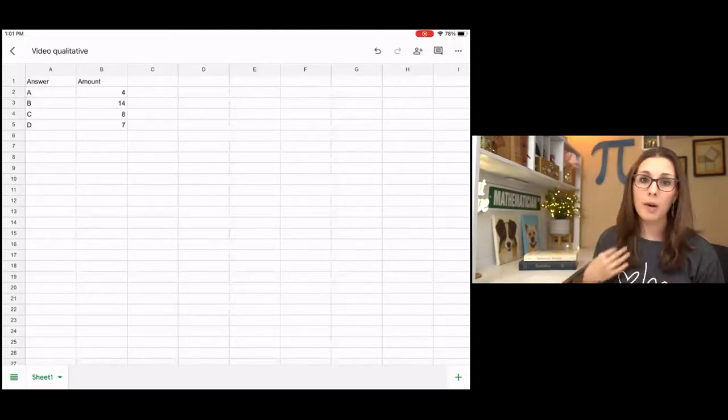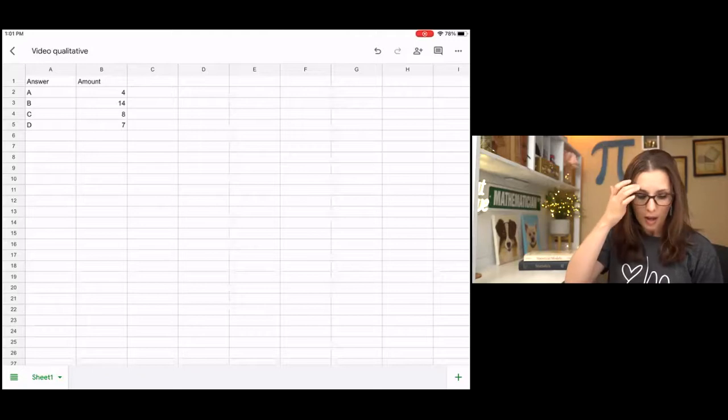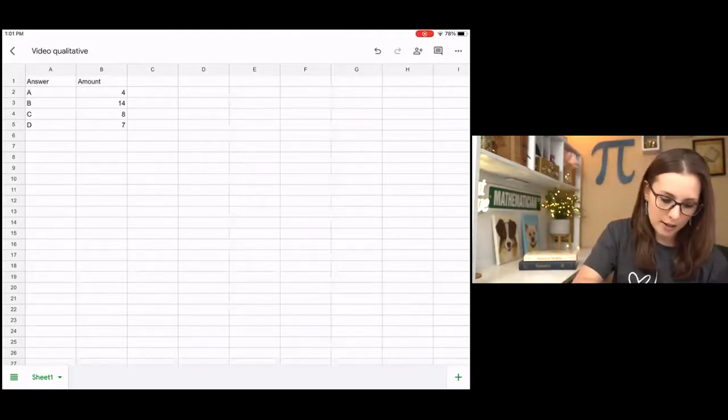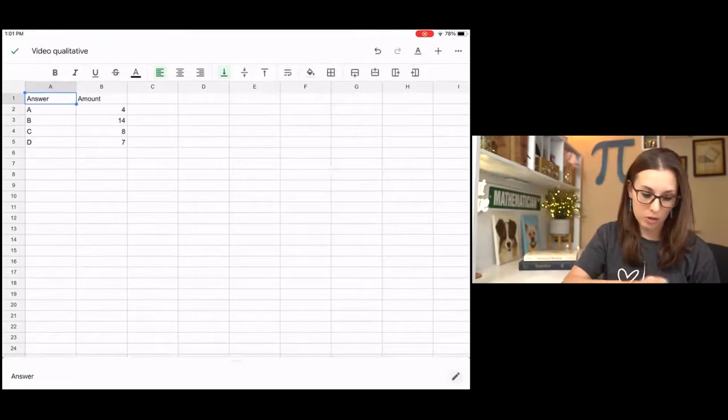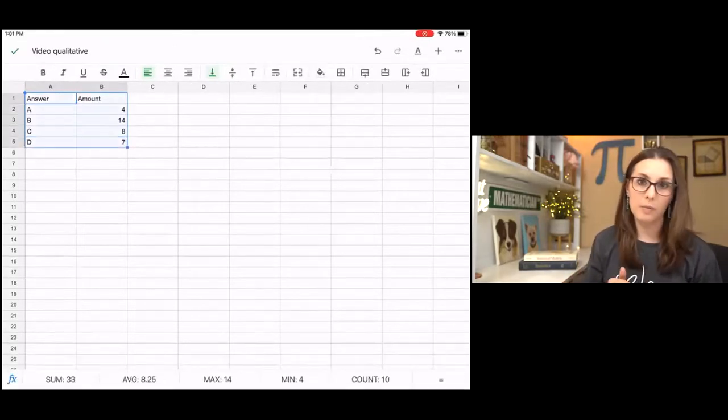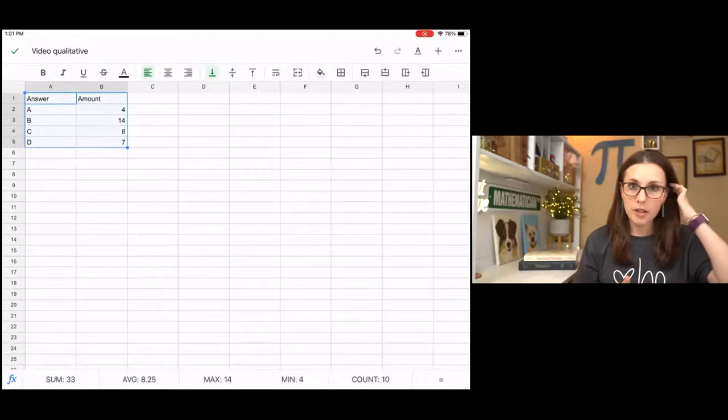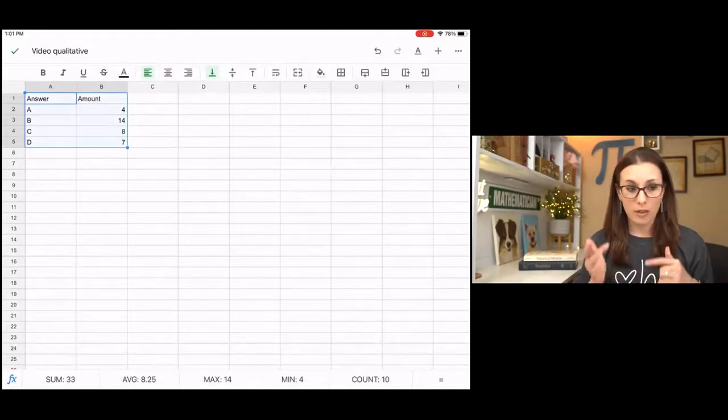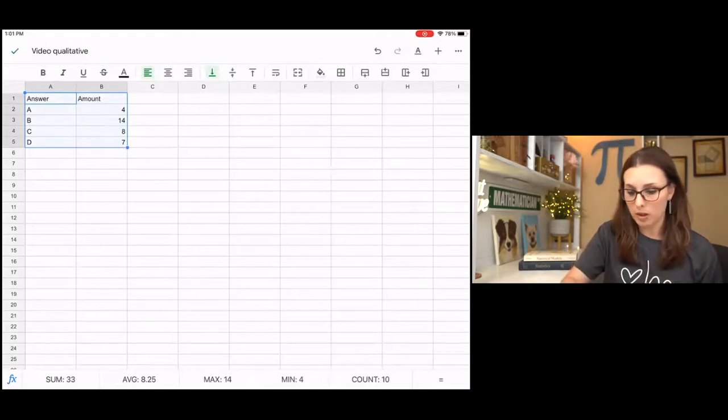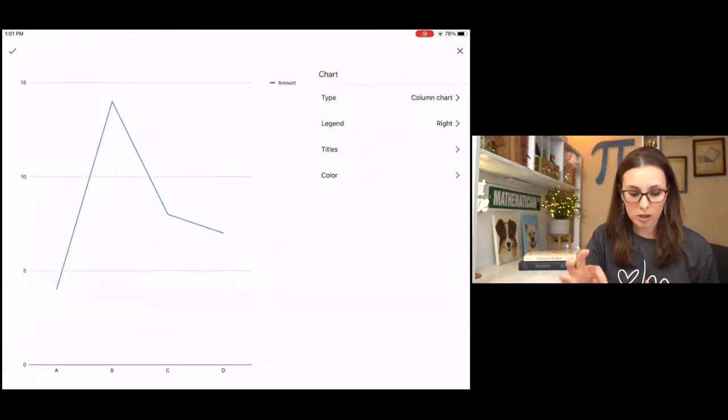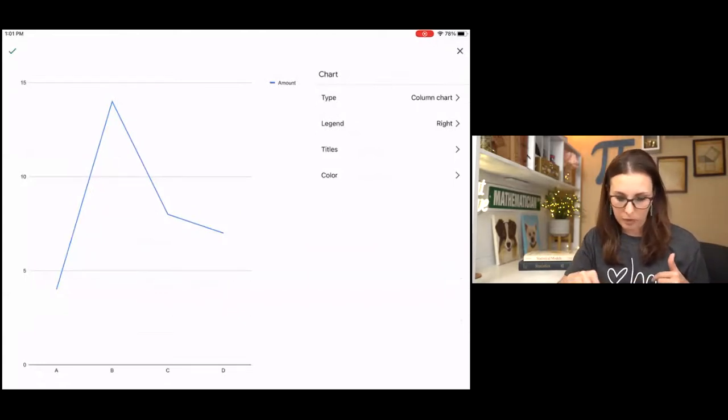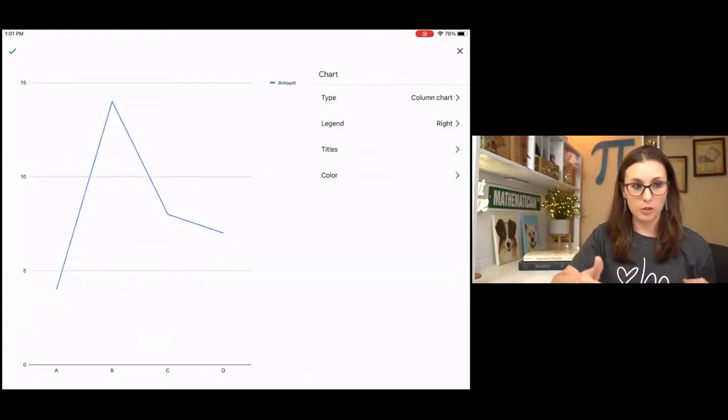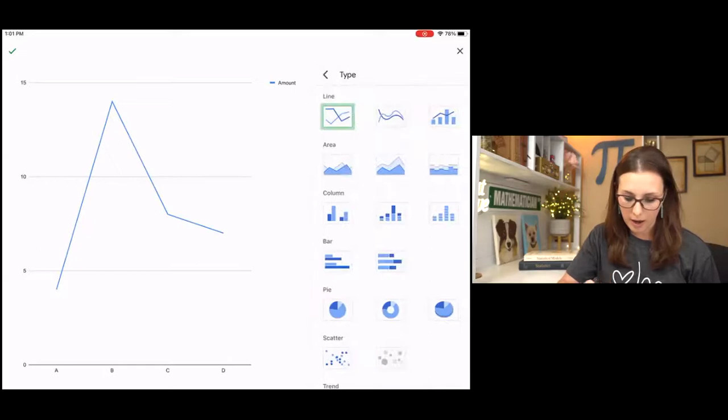So I've got my data in Google Sheets. This is Google Sheets using the app on my iPad, the free app. And I am going to highlight, so I'm tapping the cell with answer. I'm going to highlight all of this data. And then if you're using a computer or a laptop, there should be a toolbar at the top. It says insert. And you're going to insert a chart. On the iPad it's a plus sign. So I'm going to hit the plus sign and I want to do a chart.